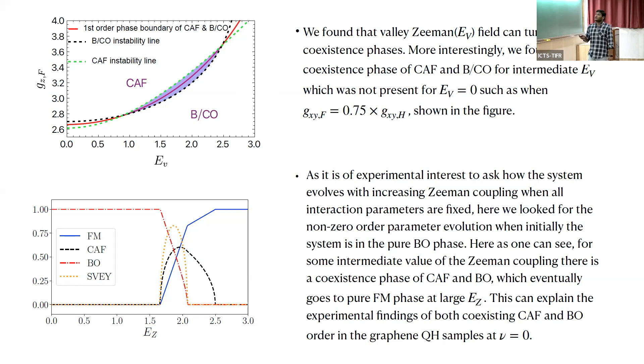One other interesting fact is that we found that the valley Zeeman also plays an important tunability parameter in these experiments. Initially at EV=0, if you don't get a coexistence phase, you can tune this to get at some intermediate value a coexistence phase. We believe that experimentalists can tune this and get qualitatively matching with our prediction.